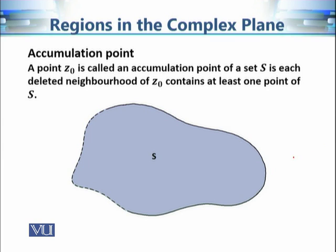Now let's continue with the definition of accumulation point, also known as limit point. A point Z0 is called an accumulation point of a set S if every deleted neighborhood of Z0 contains at least one point of S. Here, a deleted neighborhood means a disk of some radius centered at Z0 but with Z0 itself excluded.